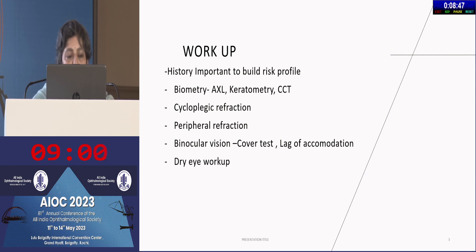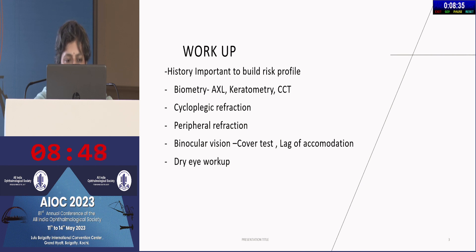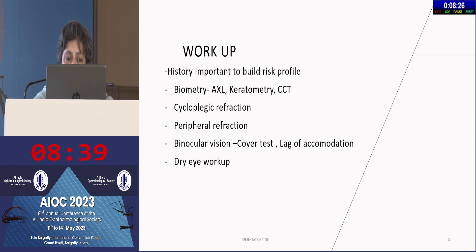In the workup, previously it consisted mostly of cycloplegic refraction and maybe a post-mydriatic test. But now we need to document a little bit more in children with myopia. You probably have to pay attention to axial length, keratometry, as well as central corneal thickness. We need to do peripheral refraction using an open field refractometer if possible, or otherwise manually. We also look at binocular vision, which includes cover test and lag of accommodation.